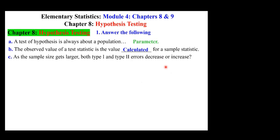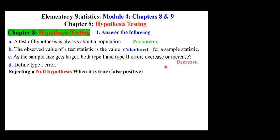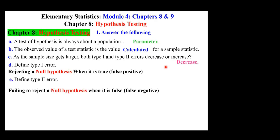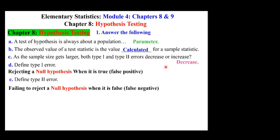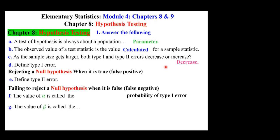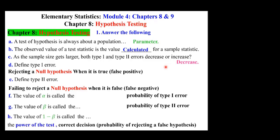As the sample size gets larger, both Type 1 and Type 2 errors decrease. Type 1 error is defined as rejecting a null hypothesis when it's true — also called a false positive. Type 2 error is failing to reject a null hypothesis when it's false, also known as a false negative. The value of alpha is called the probability of Type 1 error. The value of beta is the probability of Type 2 error. And 1 minus beta is called the power of the test — the probability of rejecting a false hypothesis.